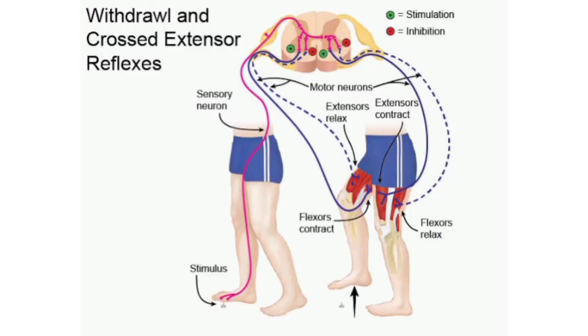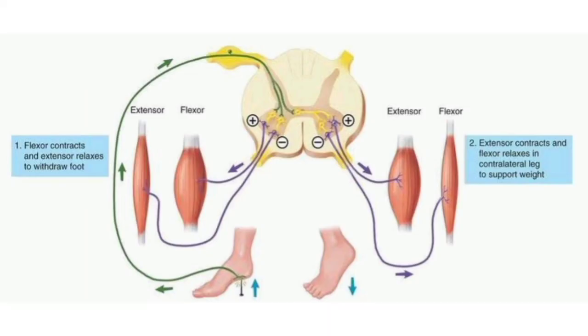Now we will see about the Crossed Extensor Reflex. It is a withdrawal reflex in which the flexors of the withdrawal limb are excited and the extensors are inhibited on the same limb — that is, the flexors are contracted and the extensors are relaxed. The opposite reaction occurs in the other limb. This crossed extensor reflex is due to Reciprocal Inhibition in the contralateral limb.